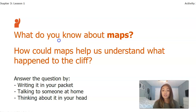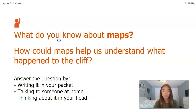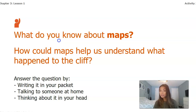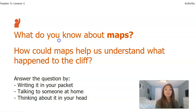Before we go back to our book to look at some maps, I want you to think about what you already know about maps and how maps could help us understand what happened to the cliff. Pause this video and answer the question by writing it down in your packet, talking to somebody at home, or thinking about it in your head. Maps can help us see how close the flagpole is to the edge, and an old map of the cliff could show us if it changed over time and by how much.